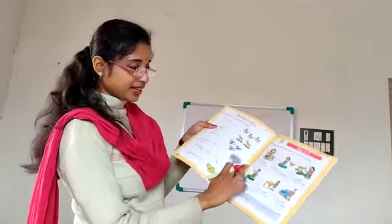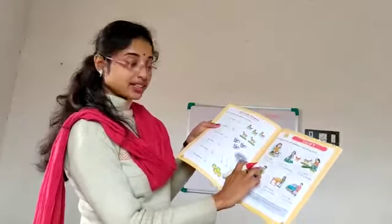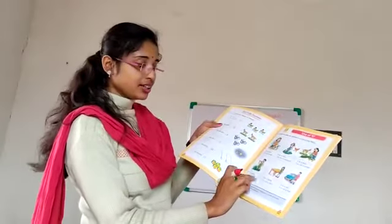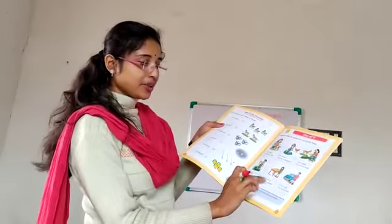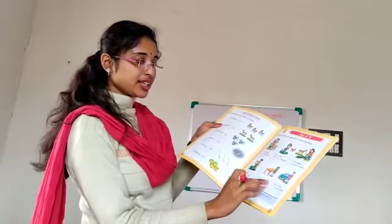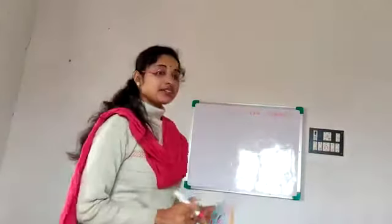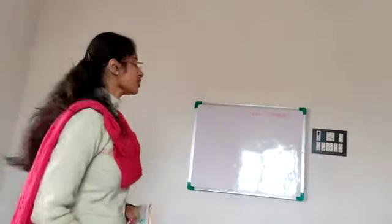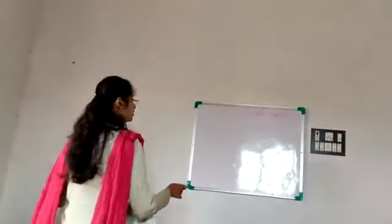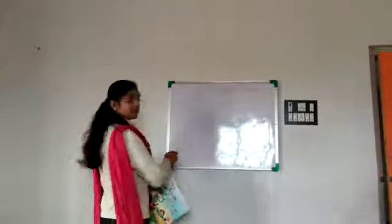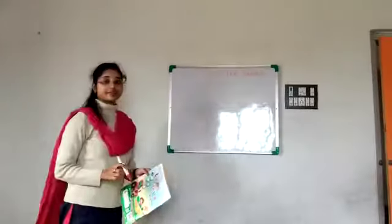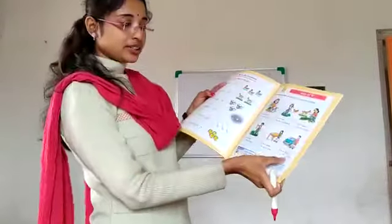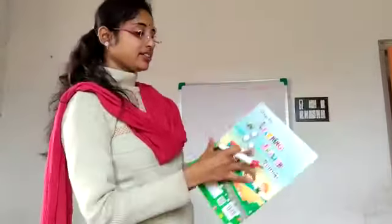Next: it is a bat, it is not a ball. It is a table, it is not a chair. Okay. It is a ball, it is not a pen. Okay. It is a car, it is not a train.